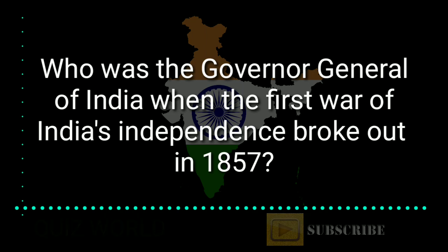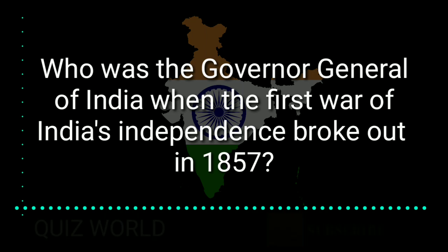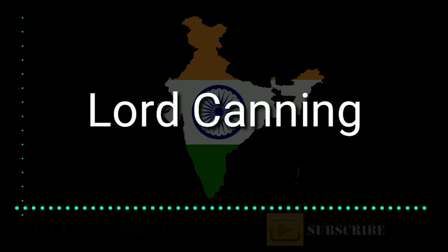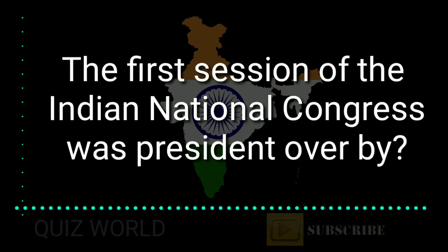Who was the Governor General of India when the first war of India's independence broke out in 1857? Answer is Lord Canning. Lord Canning was the Governor General at the time of the 1857 first Indian independence war.